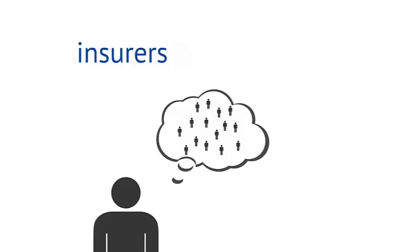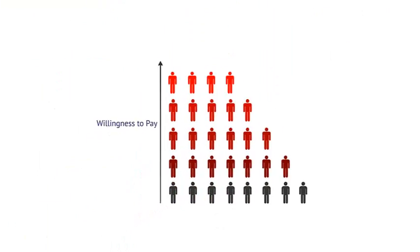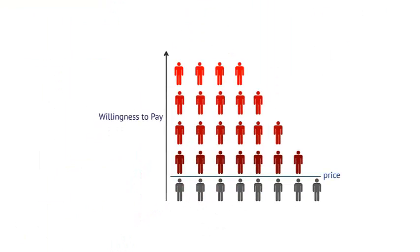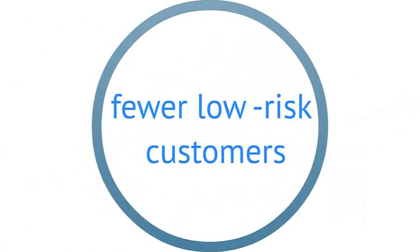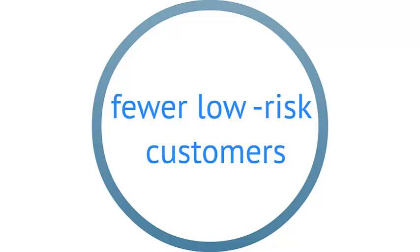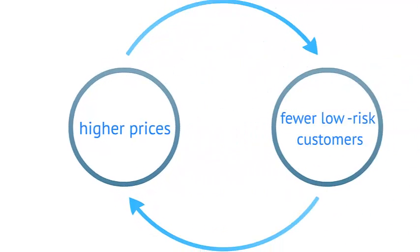Because insurers can't differentiate between high and low risk customers, they have to price insurance as if everyone was high risk. But at high relative prices, low risk customers will leave the market, because the price is more than they are willing to pay for insurance they probably won't need. With fewer potential low risk customers, the average risk of customers rises. So insurers raise prices again, forcing out more customers, and so on in a vicious cycle.